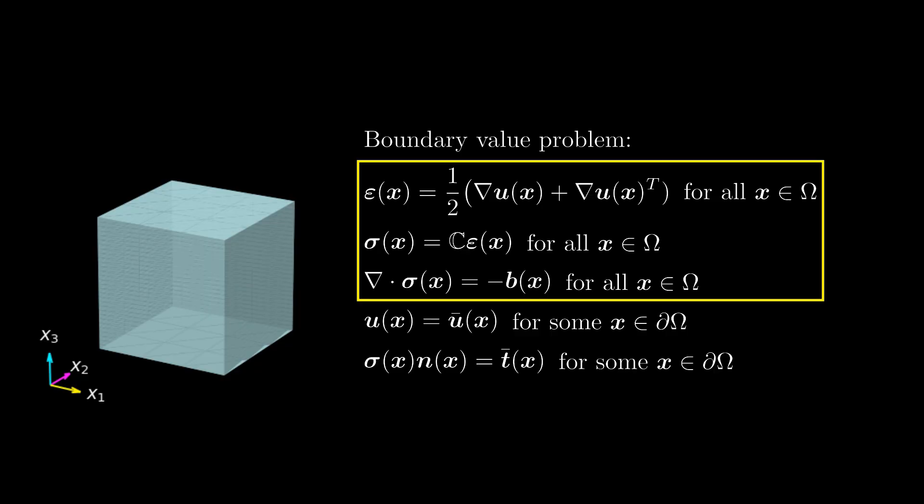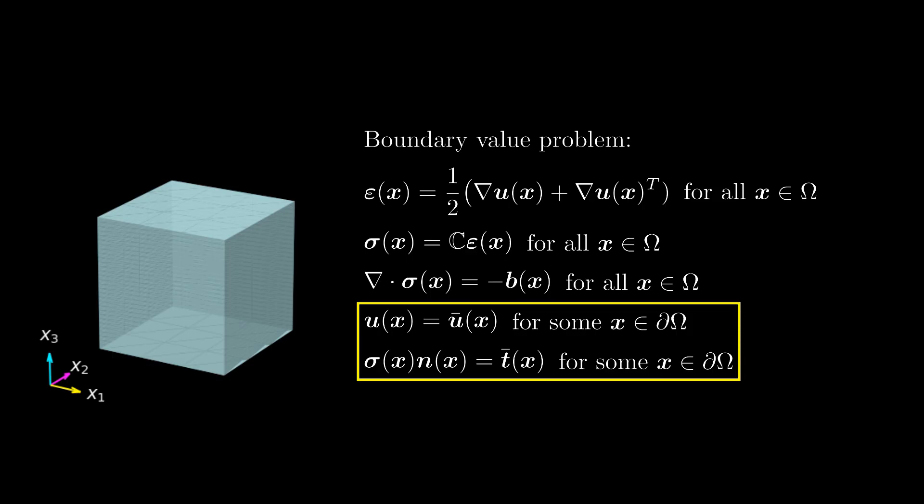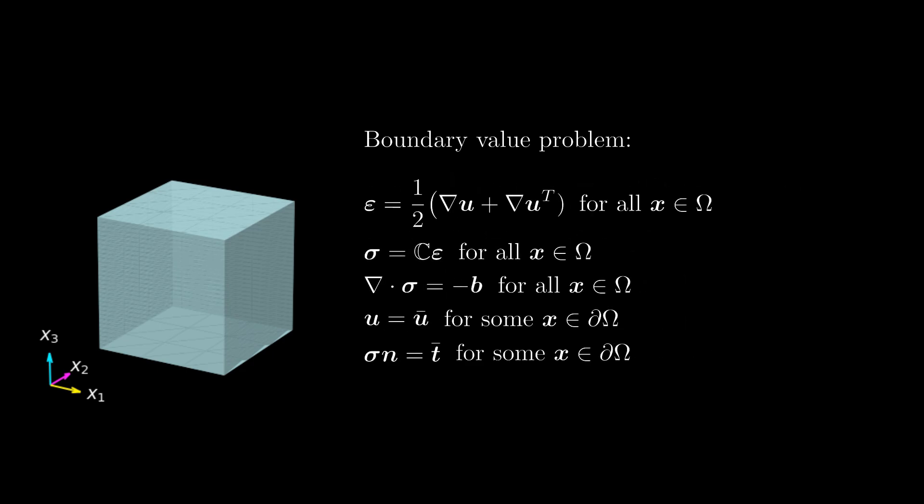Some equations describe relations between different fields over the domain omega, and other equations relate those fields to information that is given at the boundary partial omega. Note that many terms in the boundary value problem depend on x. To get a more compact notation, the dependence of the fields on x is often not explicitly indicated in continuum mechanics.